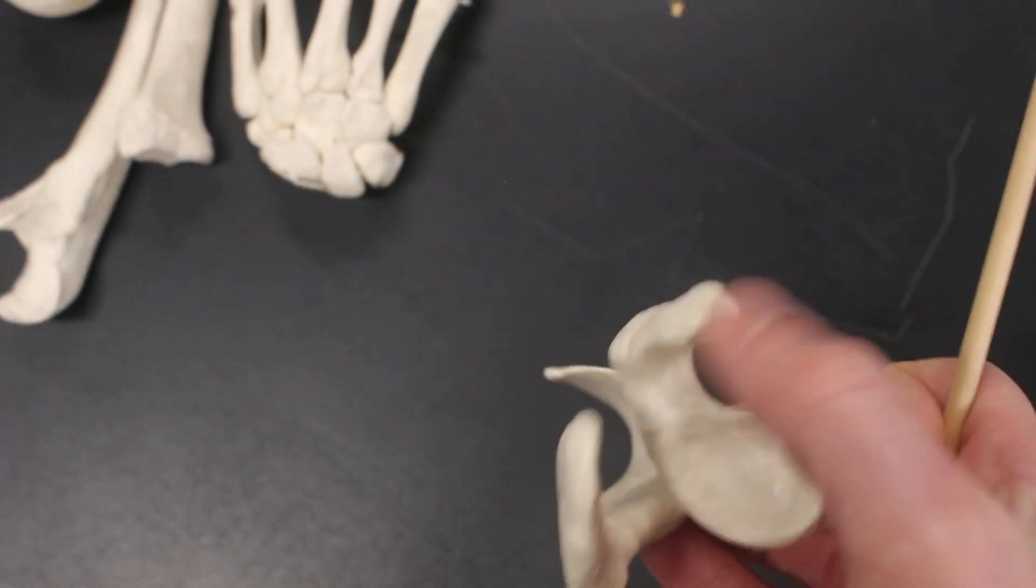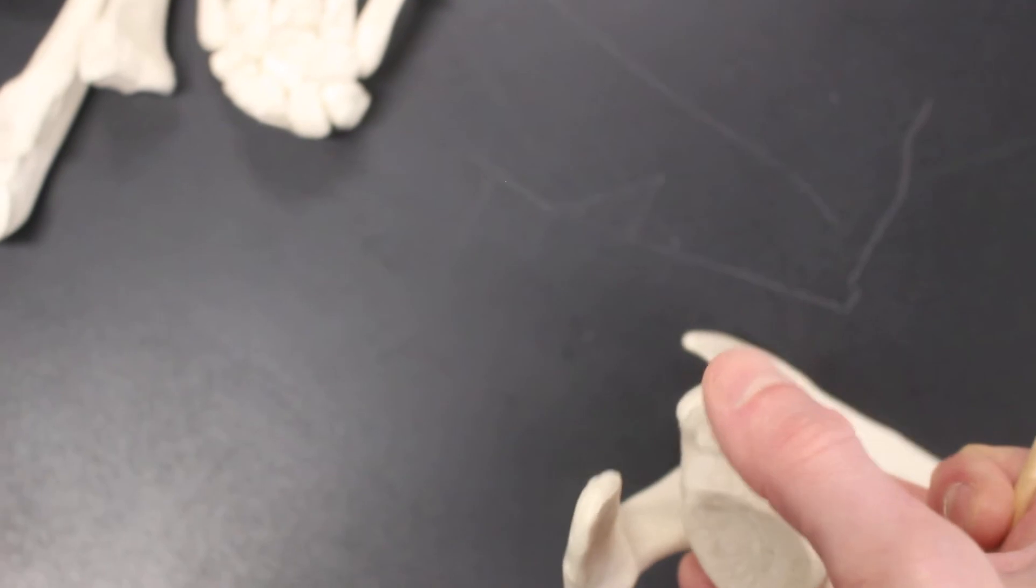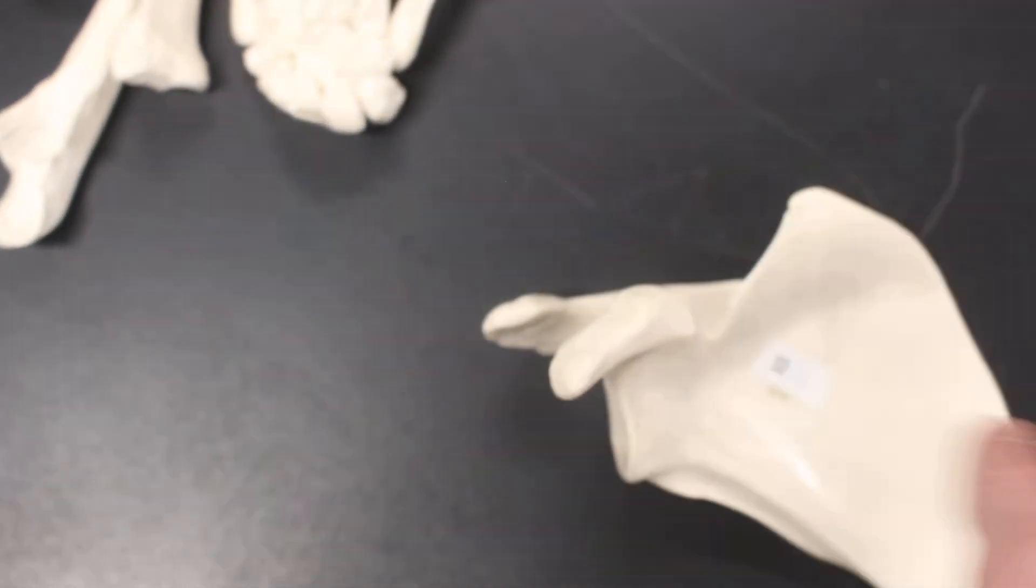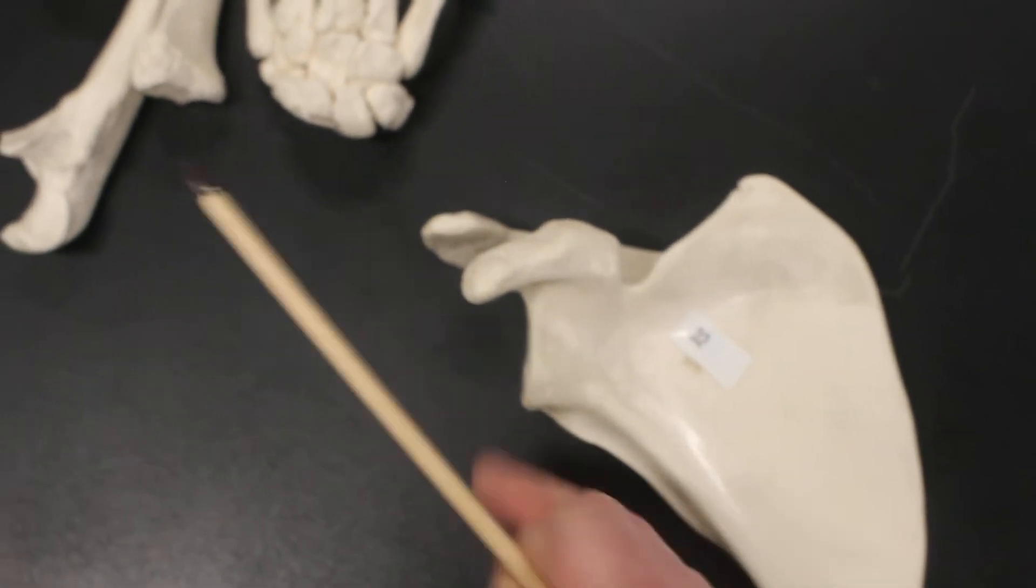Again, here's the glenoid cavity. This bit of bone here attached to the glenoid cavity, that is the coronoid process. And then we go over to the back side. This smooth area is the subscapular fossa.